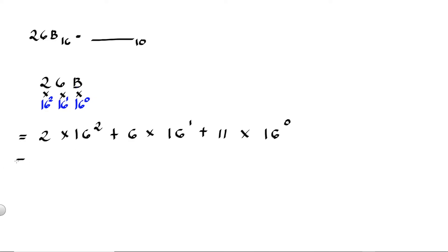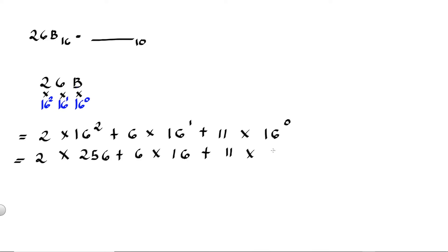Then we have 2 times 16 raised to 2, which is equal to 256, plus 6 times 16 raised to 1, which is equal to 96, plus 11 times 16 raised to 0, which equals 11. Any number raised to 0 is equal to 1, so 2 multiplied by 256 is equal to 512.